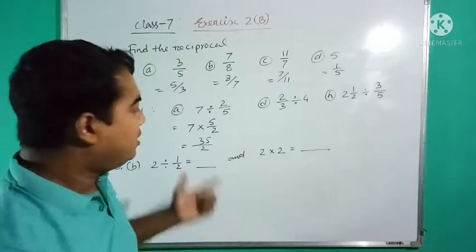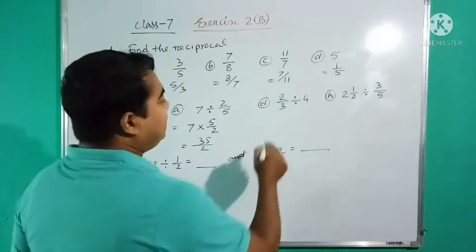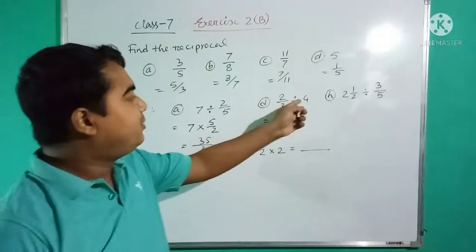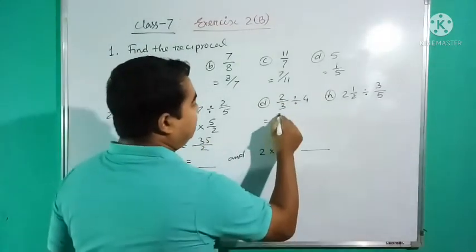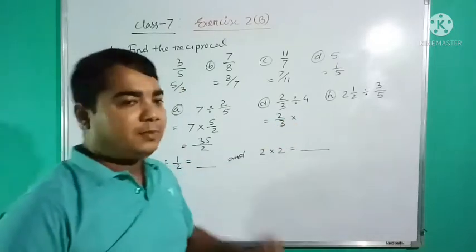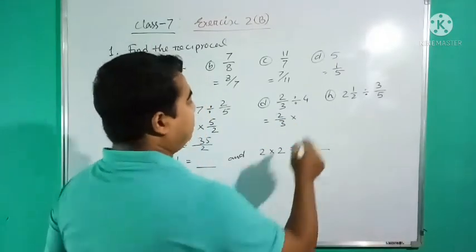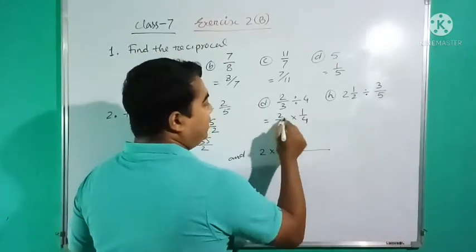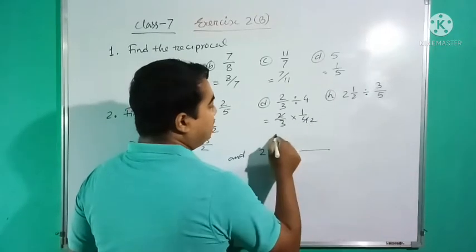Similarly, next one: 2/3 divide 4. So 2/3, I write multiplication. Four is 4/1, we can cancel 2 into 4, so 1/3 into 6.